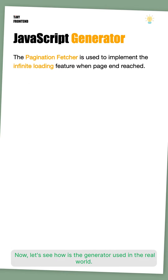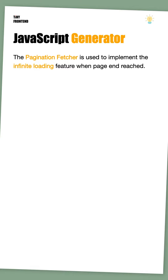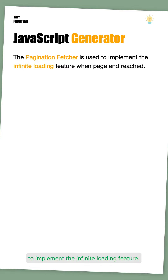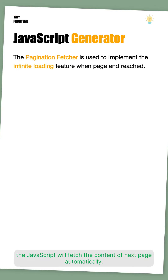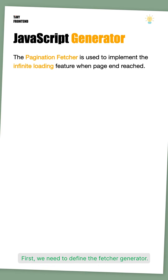Now, let's see how the generator is used in the real world. We're going to use a pagination fetcher generator to implement the infinite loading feature. When the page scrolls near the end, the JavaScript will fetch the content of the next page automatically.